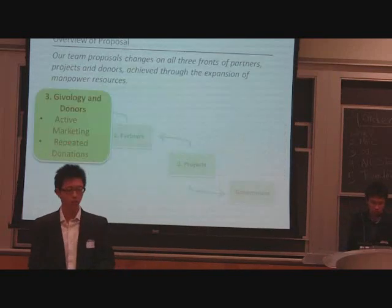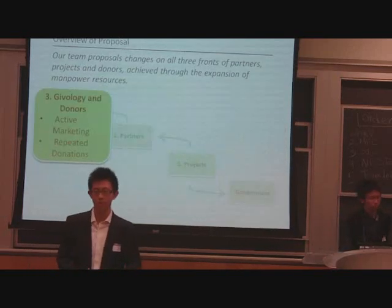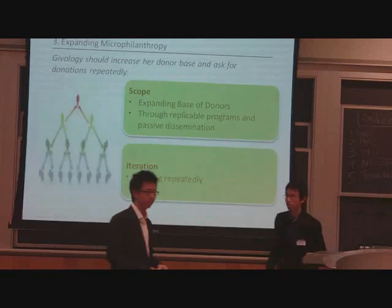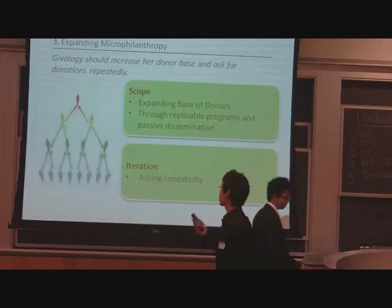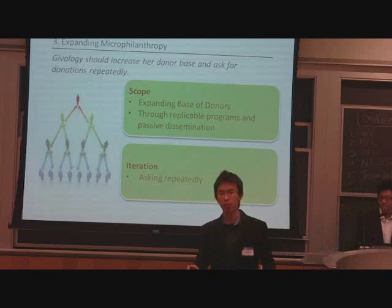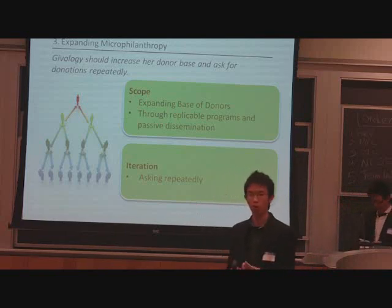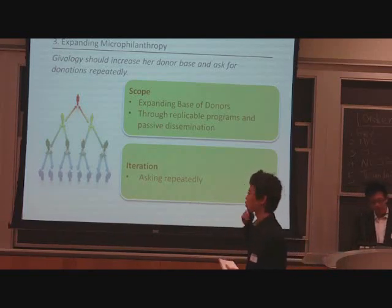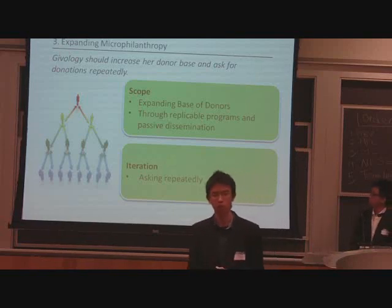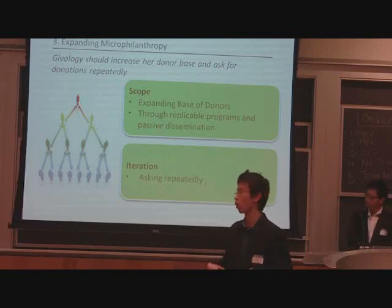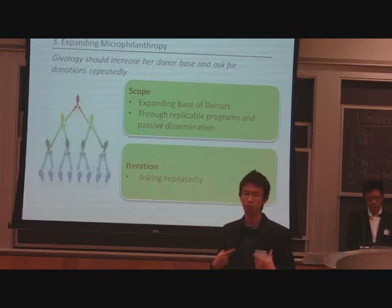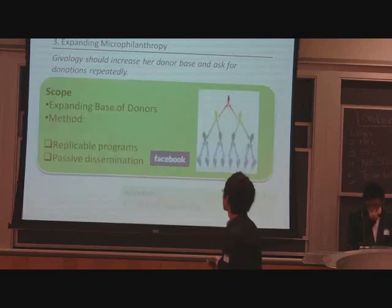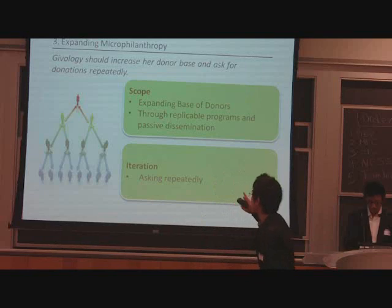Now my partner Daryl will bring us through our last recommendation and the implementable action plan. As you've seen, the two recommendations presented thus far mainly pertain to field strategy in terms of who we work with and what we work on. But in order to be effective, another area we want to address is what Giveology must do at home in expanding micro-philanthropy as its model. There are two main key areas: firstly, scope, and secondly, iteration.